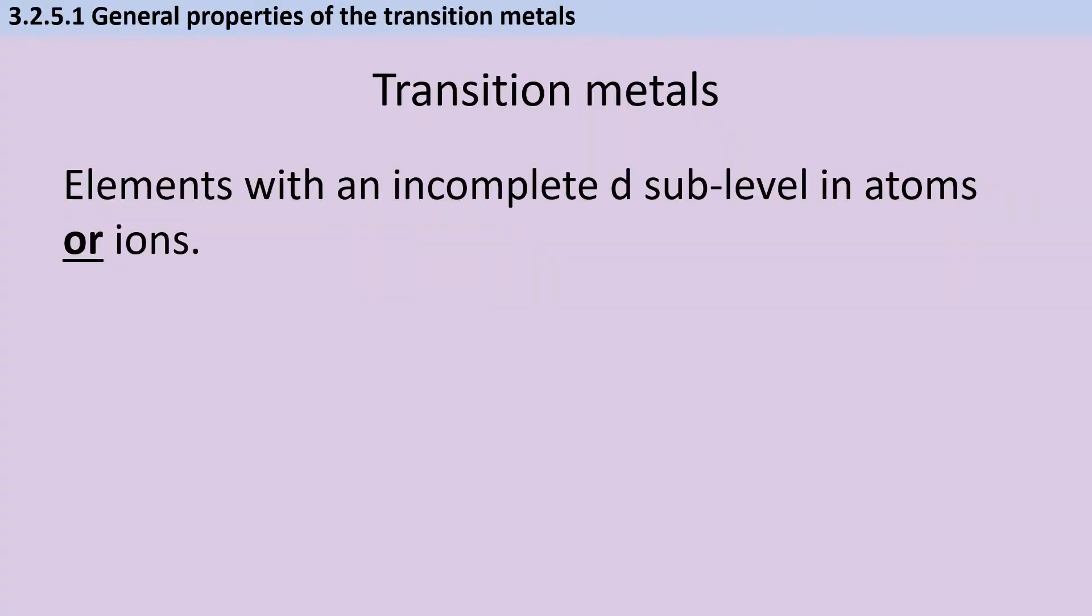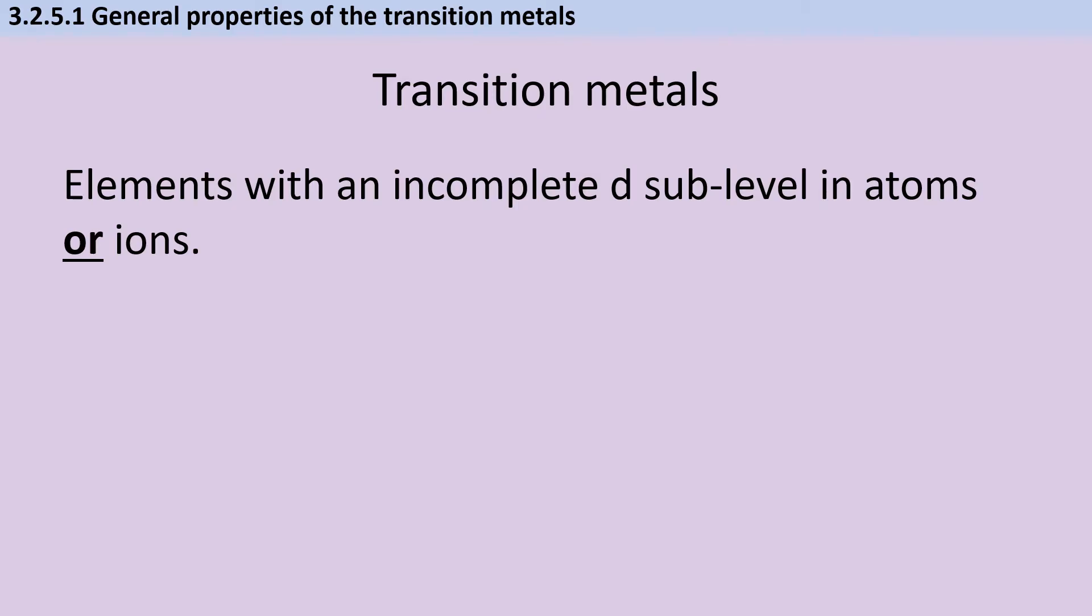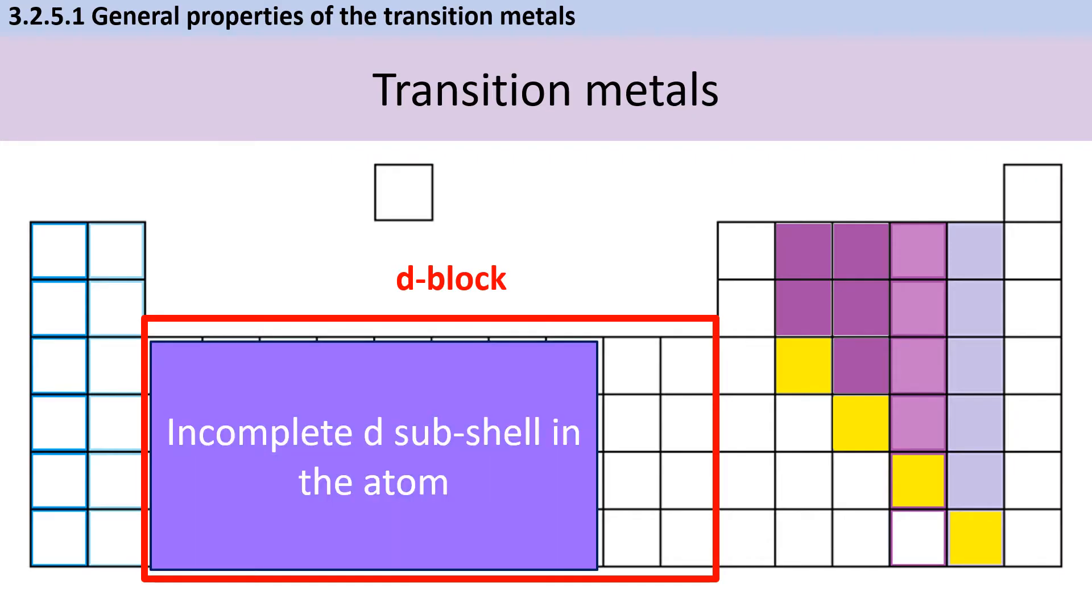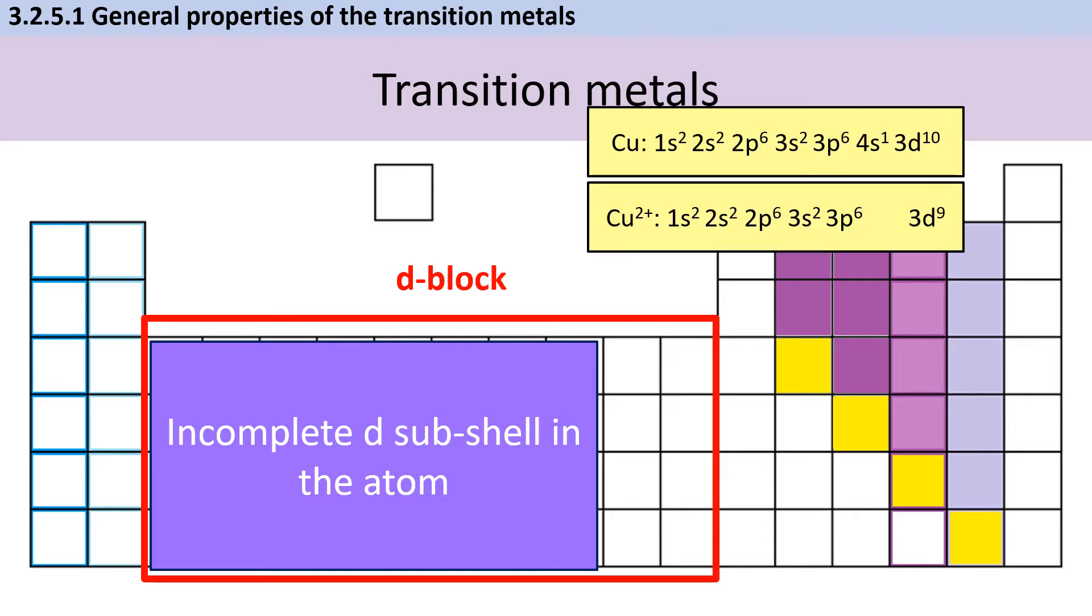AQA defines transition metals as elements with an incomplete D-sub level in either the atoms or the ions. At GCSE we treated the entire D-block as transition metals, but at A-level we refine our definition. Elements from scandium to nickel have an incomplete D-sub shell in their atoms. Copper has a full D-sub shell as an atom, but when it forms 2+ ions these only have nine D-sub shell electrons. Zinc is not a transition metal as both its atom and its ion have full D-sub shells.